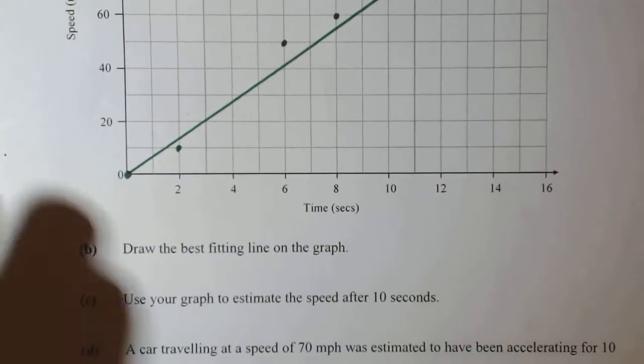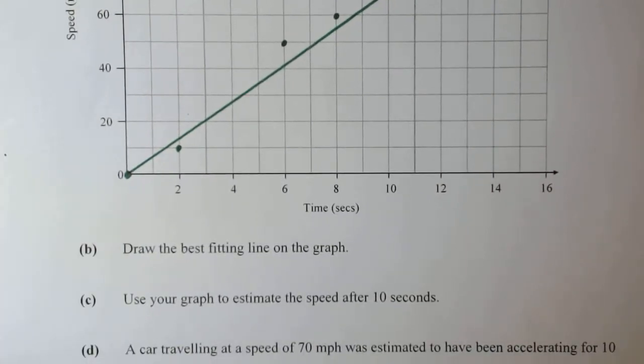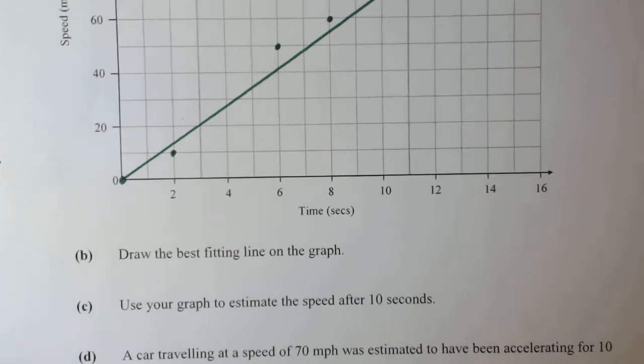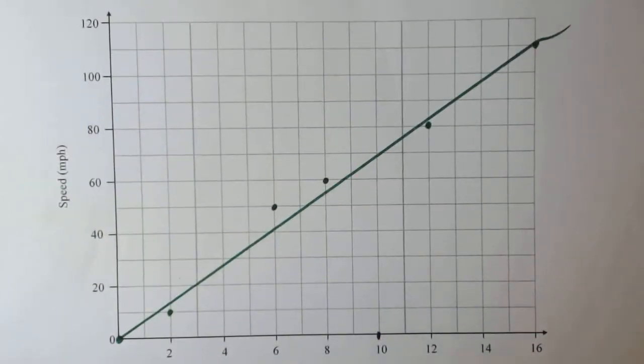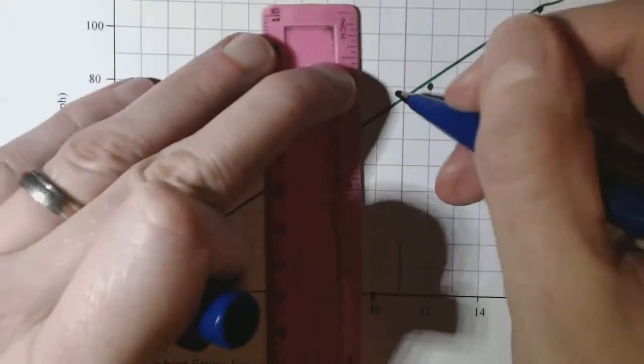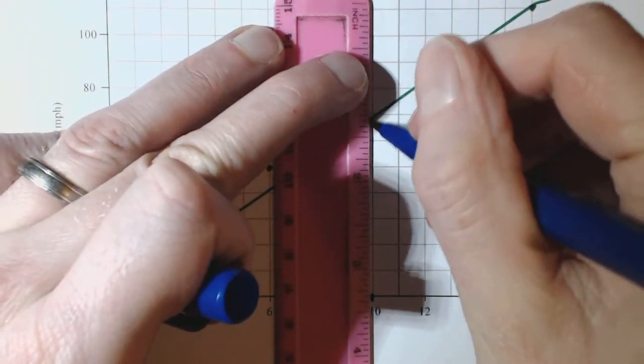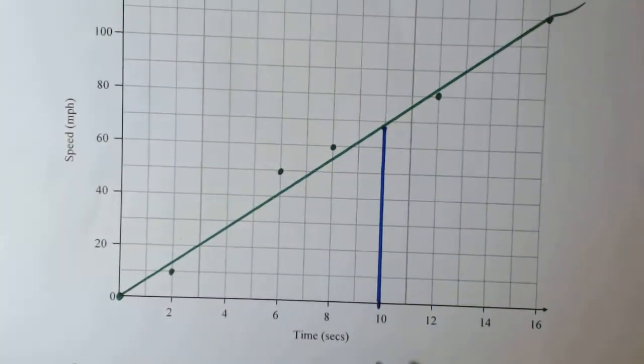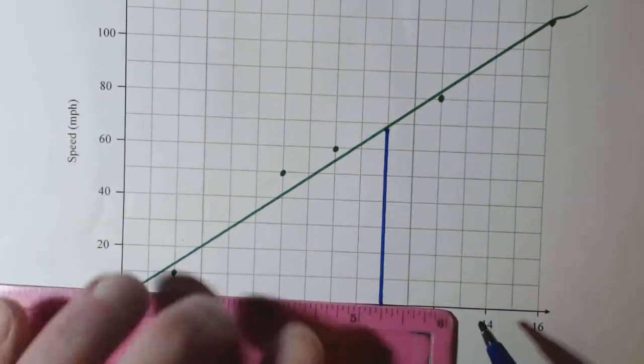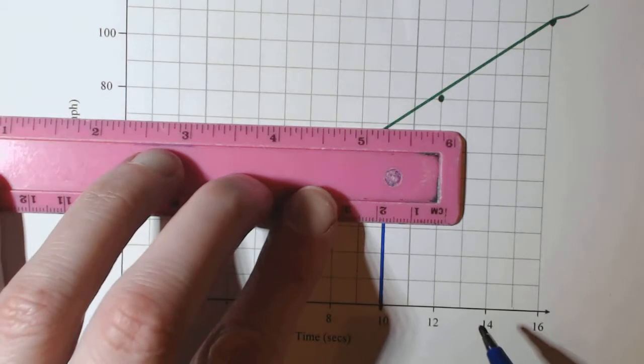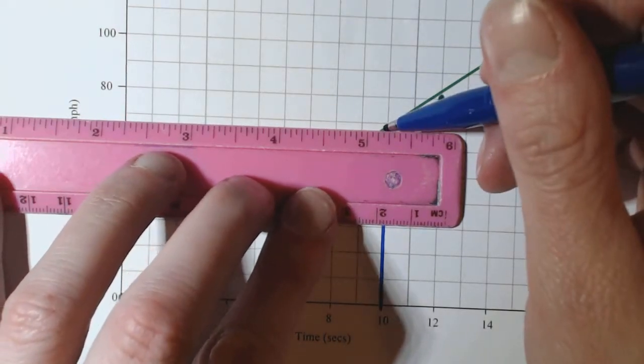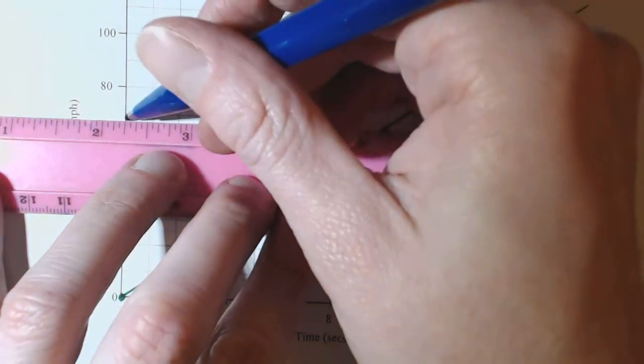So what we then have to do is estimate after 10 seconds. So what we do is we look at 10 seconds, and take your ruler, and you can just draw dotted, or I'm just going to draw a solid one, up to 10. And then, as soon as it hits the line of best fit, take right angles and take it to the next axis.